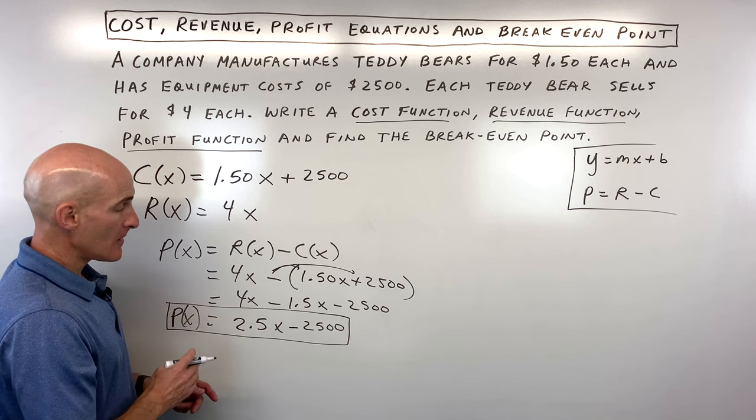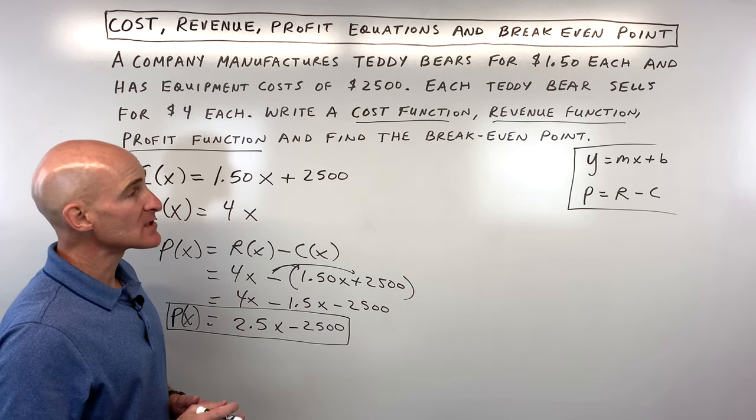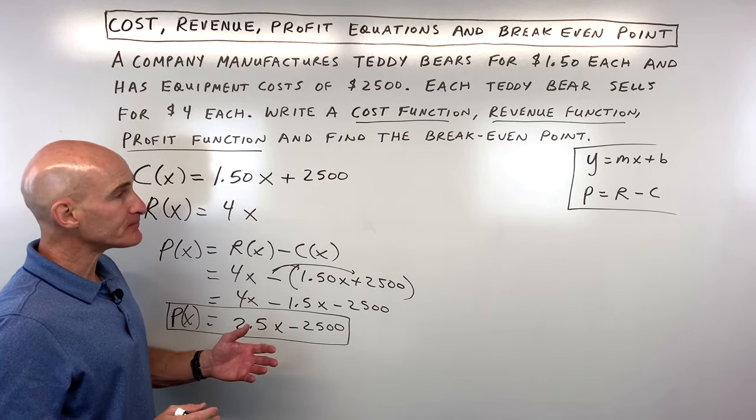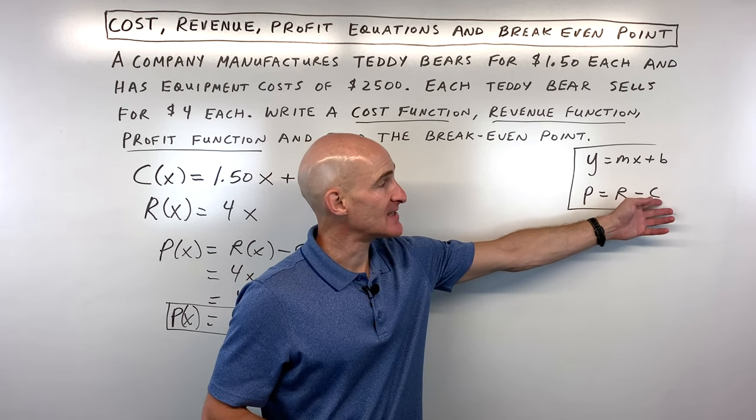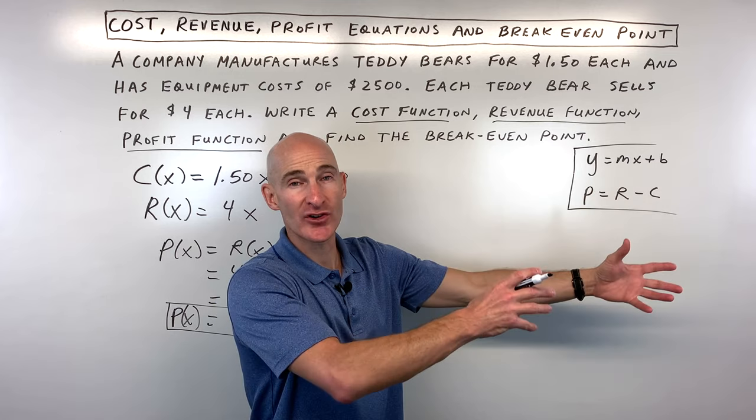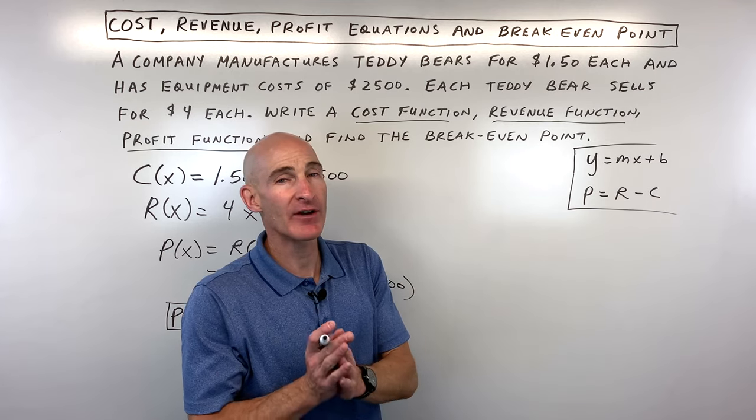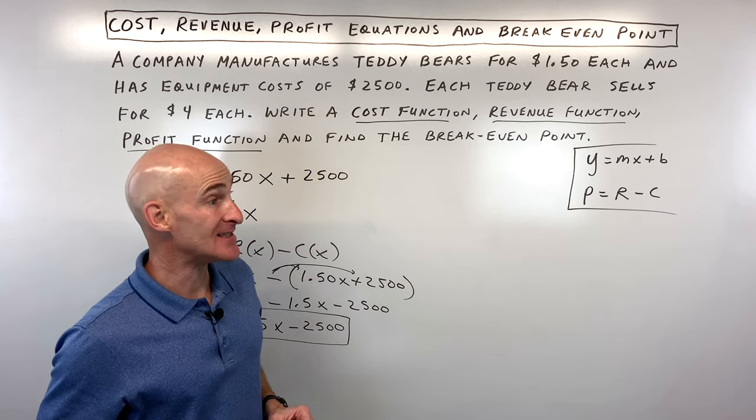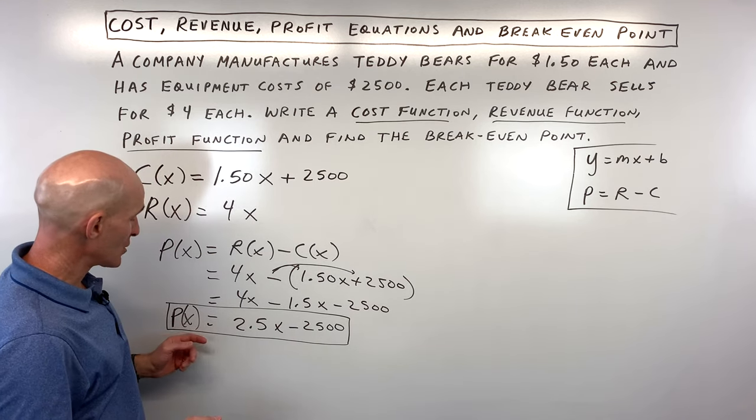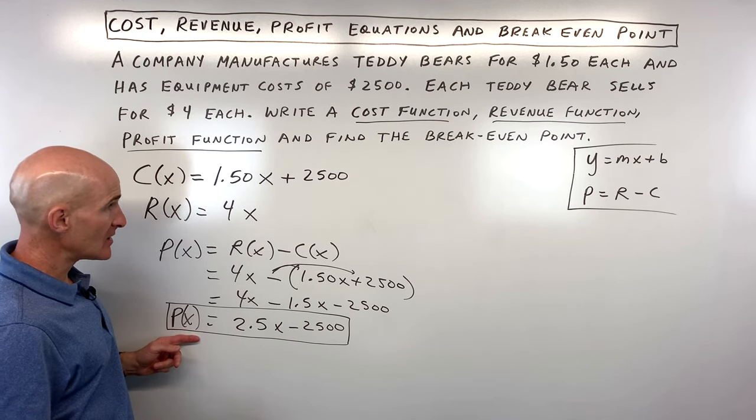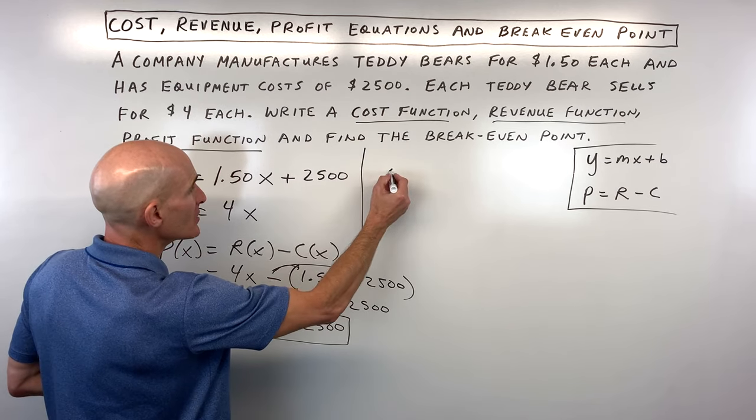Now, to find the break-even point, what is the break-even? Basically, the break-even is when the amount of money that you've taken in is the exact same amount as the cost or your expenses going out. So really that profit at that break-even point is going to be 0, after which then you start to become profitable. So what we're going to do is we're going to set this P of X here equal to 0, and we're going to solve.